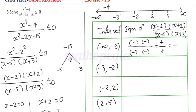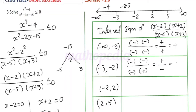We check interval (-3, -2): consider x = -2.5. Then (-2.5 - 2) = negative, (-2.5 + 2) = negative, (-2.5 - 5) = negative, (-2.5 + 3) = positive. This equals (+) divided by (-)(-) = (+)/(+)(−) — simplifying, the result is negative.